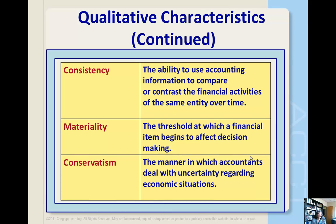The last three of the seven qualitative characteristics are consistency, materiality, and conservatism. Consistency refers to the ability to use accounting information to compare or contrast the financial activities of the same entity over time — so comparability is across entities, while consistency is within one entity over time. Materiality is closely related to relevance and refers to the threshold at which an item begins to affect decision making; items are material when they are large enough to possibly affect decisions. Finally, conservatism refers to the manner in which accountants deal with uncertainty regarding economic situations and conditions.